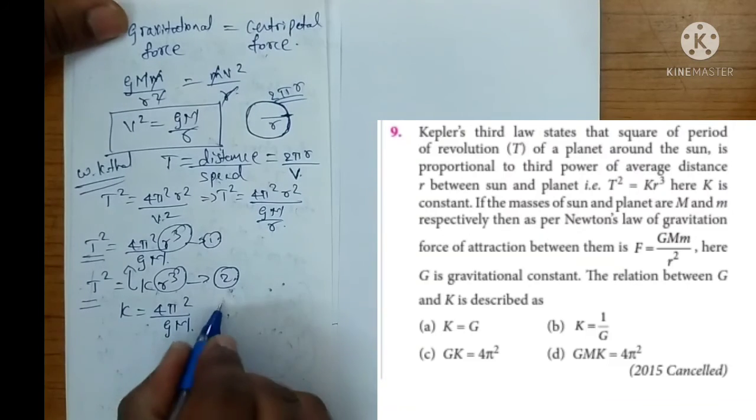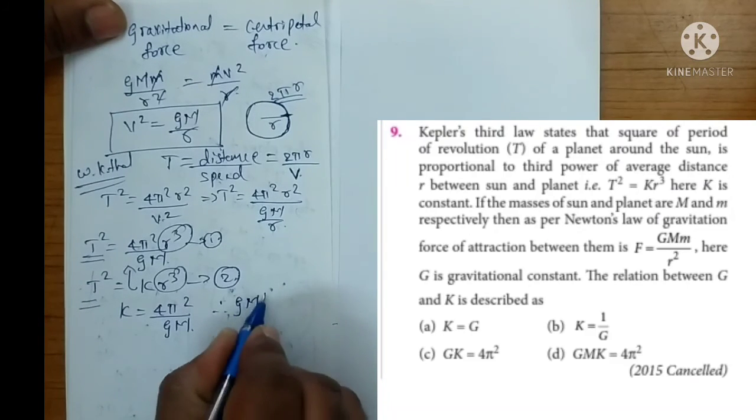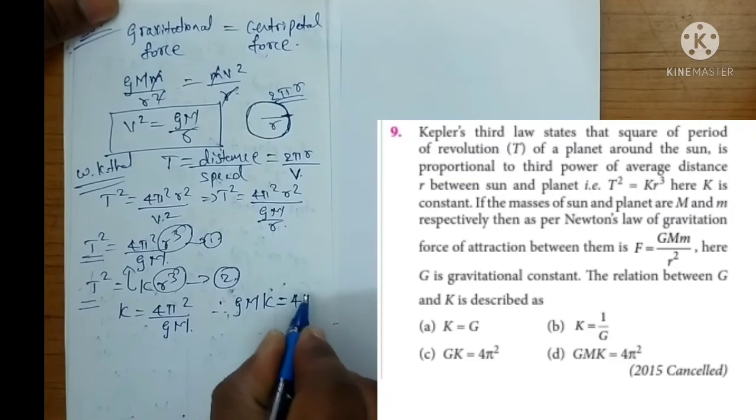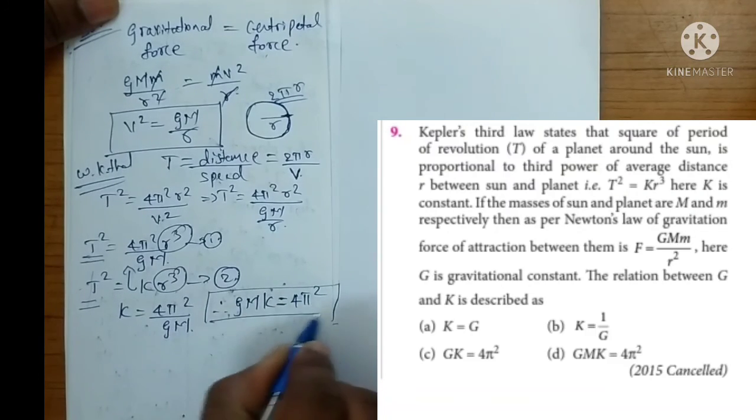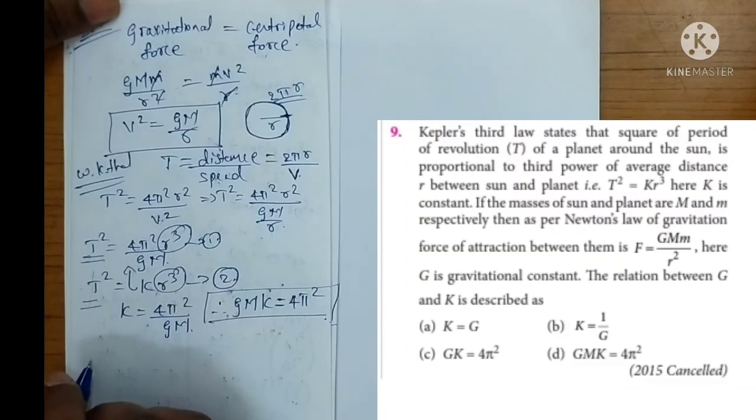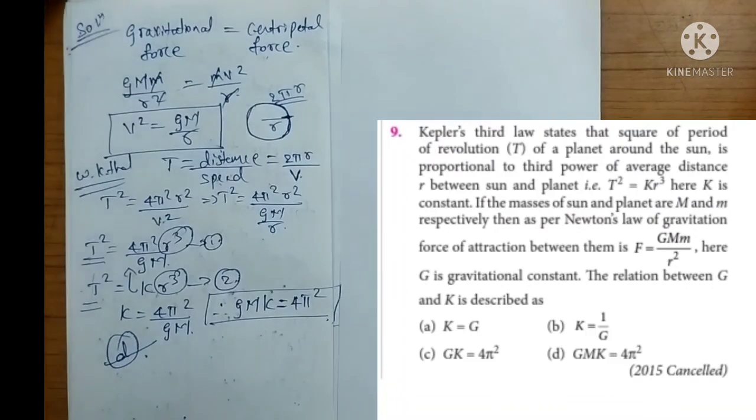So cross multiplication gives: GMk = 4π². So based on this, we can say which option is correct? Yes, option D would be the right answer.